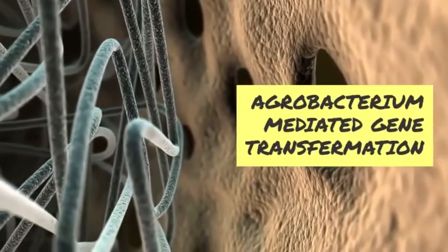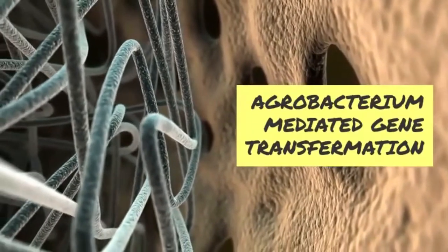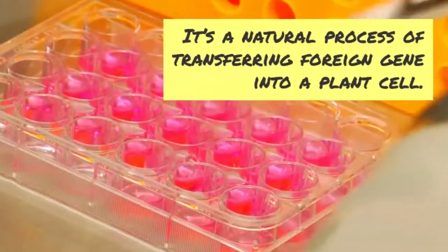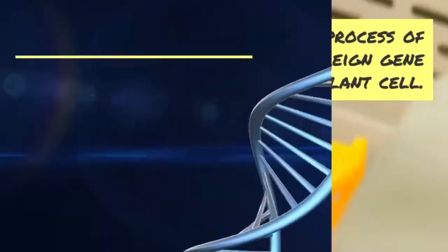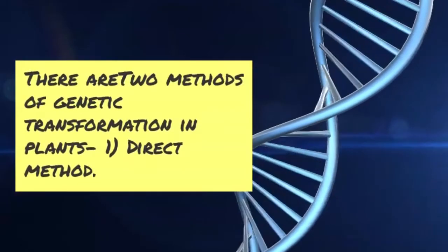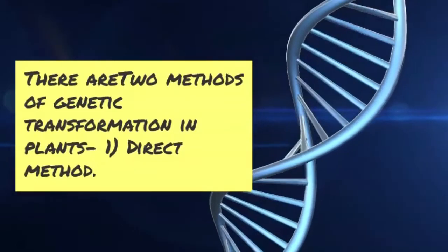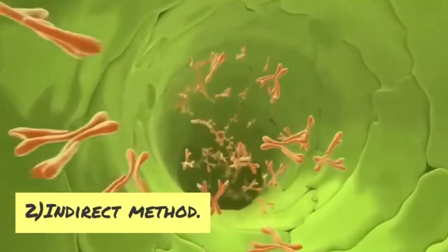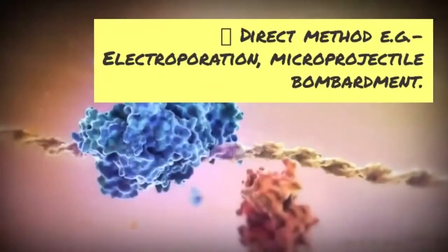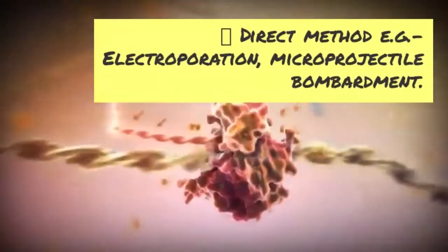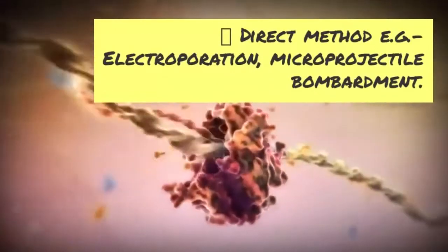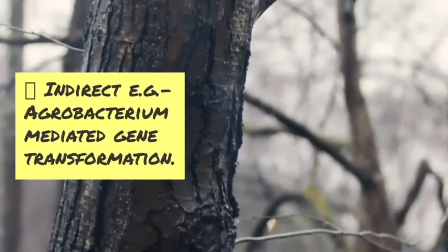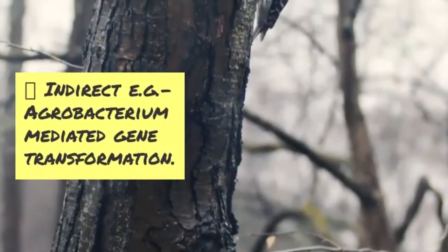Agrobacterium-mediated gene transfer is a natural process of transferring foreign genes into host cells. There are two methods of genetic transformation: the first is the direct method and the second is the indirect method. Examples of direct methods include electrophoresis and micro-projectile bombardment, while the indirect method is agrobacterium-mediated gene transfer.